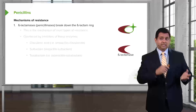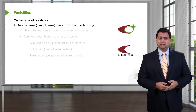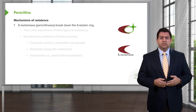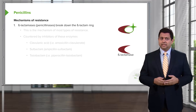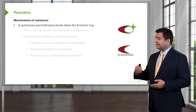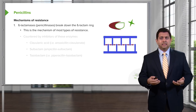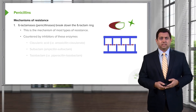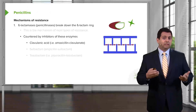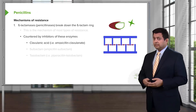The bacteria have developed defense mechanisms against the penicillins. Some bacteria have beta-lactamase enzymes, also called penicillinases in other parts of the world. These beta-lactamases break down that beta-lactam ring. This is the mechanism of most types of resistance, and they're countered by inhibitors of these enzymes. Clavulanic acid is an agent that inhibits the beta-lactamase.